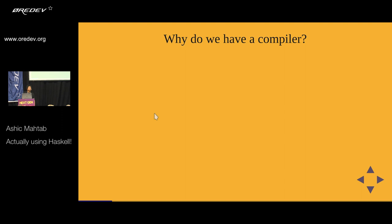Before that, quick question: why do we have a compiler? What does a compiler give us that an interpreter doesn't? Runtime speed — it compiles down to native code and you get a performance boost. What else? Really good linting — it can do error checking, tell us when we get something wrong. It can verify our programs for us to a certain extent.